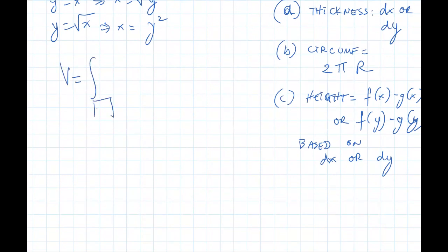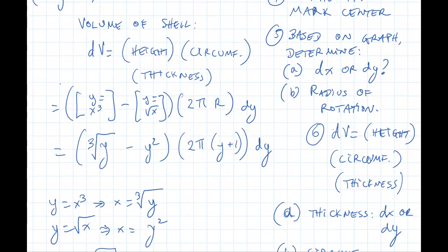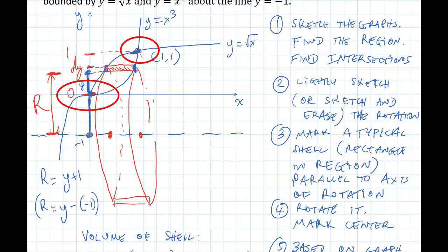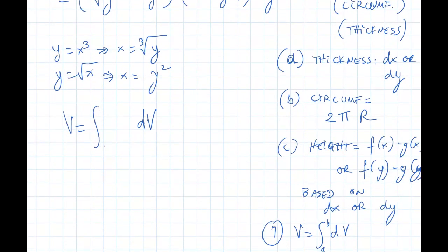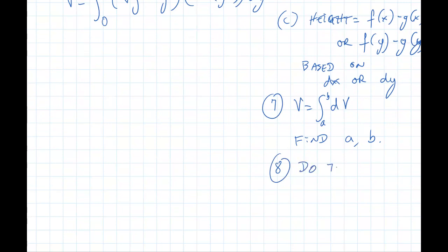Then finally, v equals the integral from a to b of dv. Find the limits of integration from the graph. I'm integrating with respect to y, so I'm looking along the y-axis. The first shell is down here at y equals 0, and the last rectangle is up here at y equals 1. Therefore, I'm filling in 0 and 1 as the limits, and dv equals all of this dy. Once I'm here, all I have to do is compute the integral.